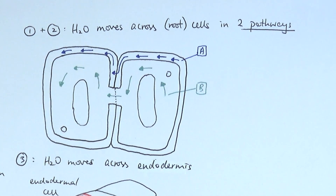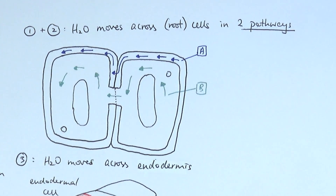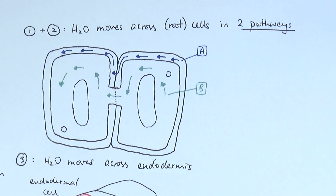The first two steps are about how the water moves across the root cells. Actually, I put the word 'root' in brackets because the water moves using these two pathways in any other part of the plant as well — whether it's in the leaves or anywhere else, they also use these two pathways. But here we'll focus on the roots.